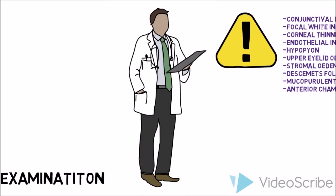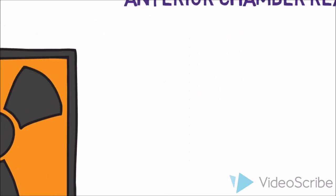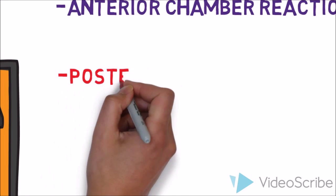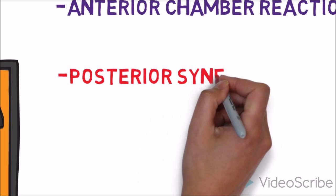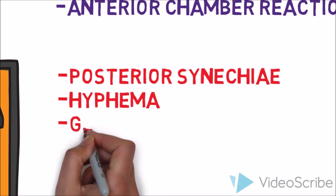In severe cases you get posterior synechiae, which is where the iris fuses to the lens, hyphema where blood collects in the anterior chamber of the eye, and glaucoma.